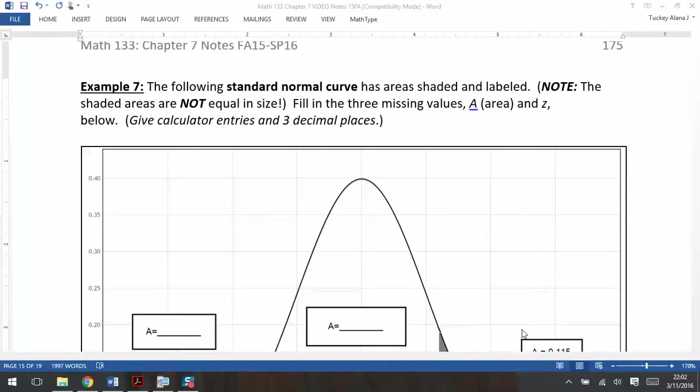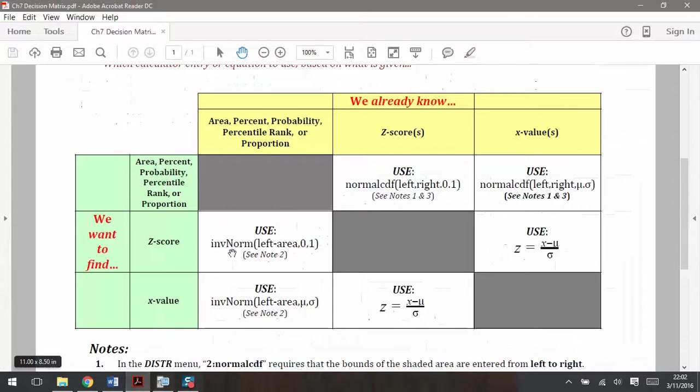In this example, we're going to combine together the two main ideas we've learned for the normal distribution in this section, namely how to use normal CDF to find the area, the percent, the probability, or using inverse norm to find the z-score and x-value.